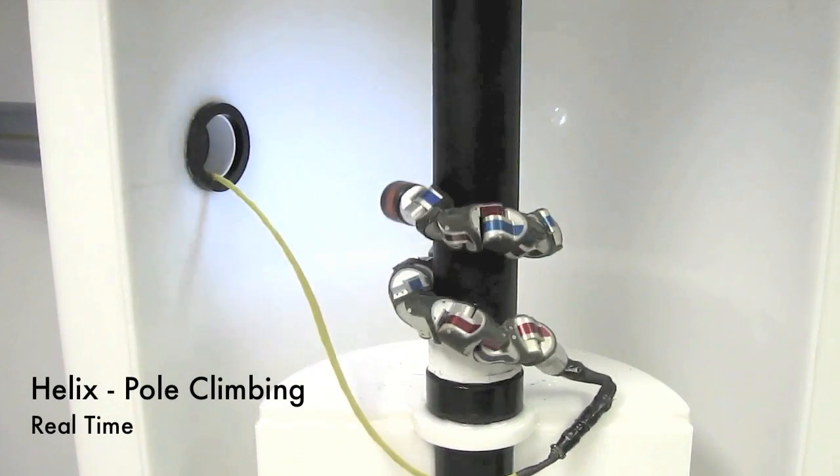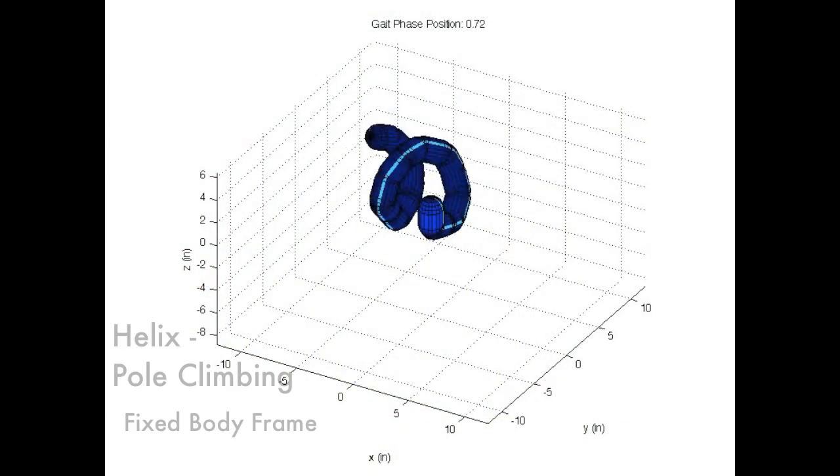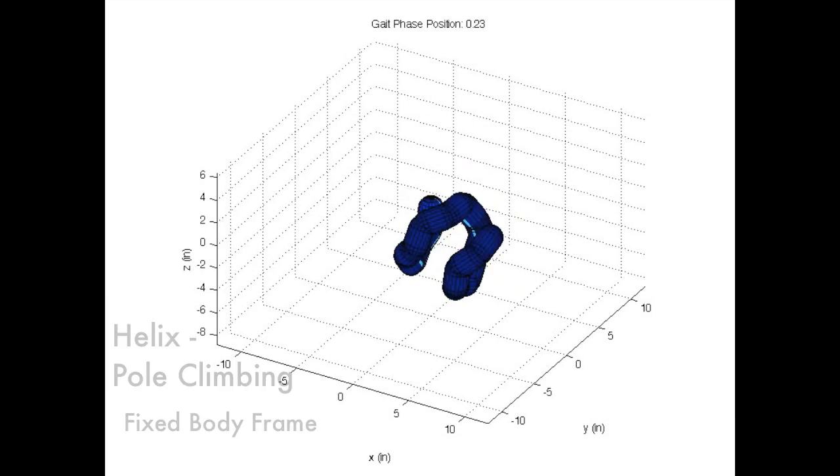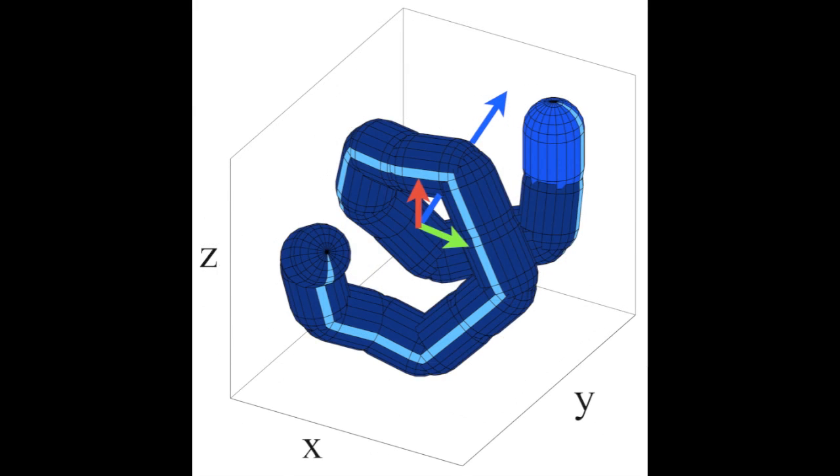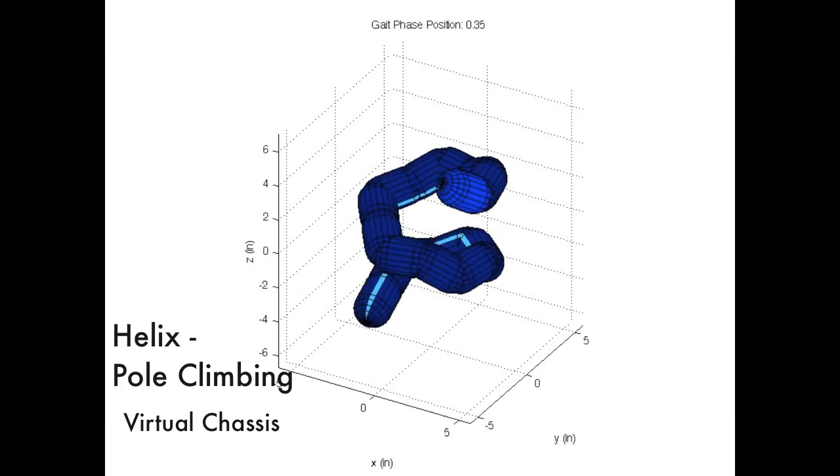Applying this optimized procedure to pole climbing shows some of the clearest benefits of the virtual chassis. The complex motions of the snake when viewed in a fixed frame are again greatly simplified by the virtual chassis, and the robot is now much more closely aligned with an operator's intuitive notions of position and orientation.